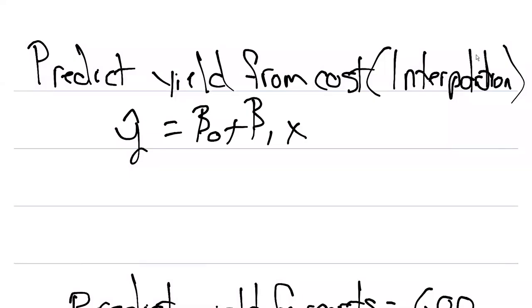This video will walk through an interpolation problem where we want to predict the yield in terms of bushels per acre from the cost. We're going to go back to the same formula we looked at earlier, where y hat equals beta zero plus beta one times x.